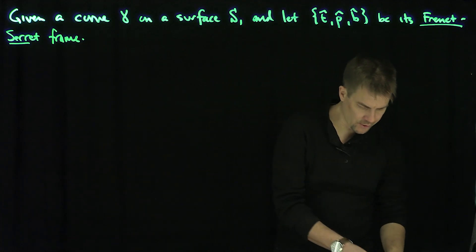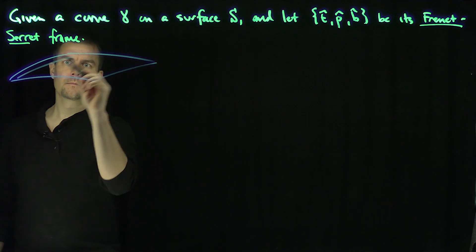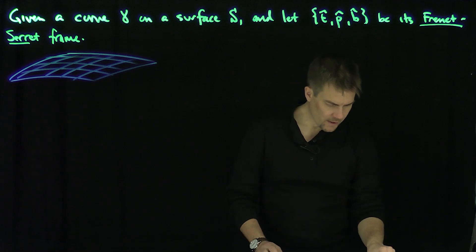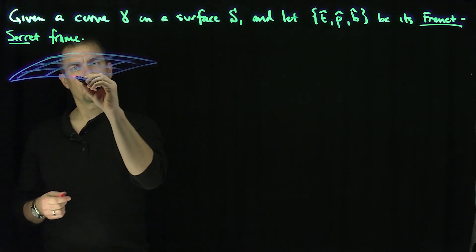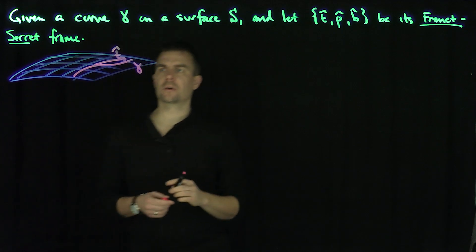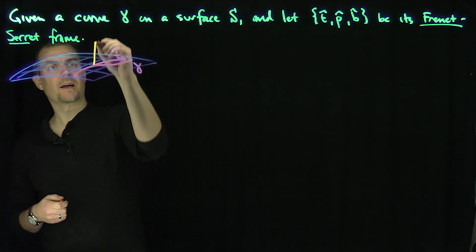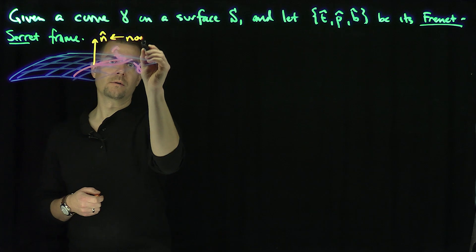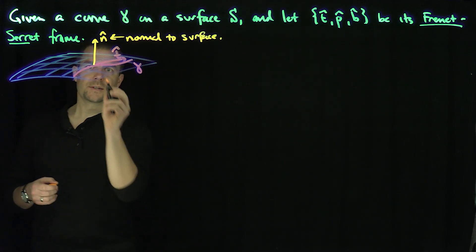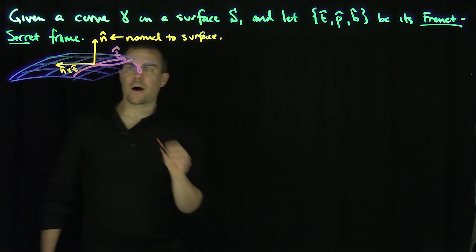Let's look at the configuration geometrically. There is our surface S, on which we have a curve — there's my gamma. At a particular point, I have t-hat, my unit tangent vector to the curve, which is also in the tangent plane. We have a normal vector to the surface, n-hat, and crossing these gives a triply orthogonal system: n-hat cross t-hat.